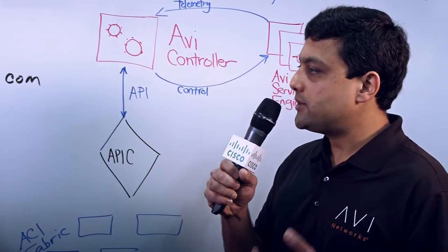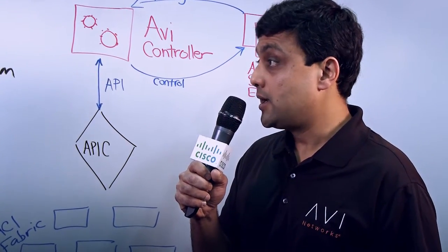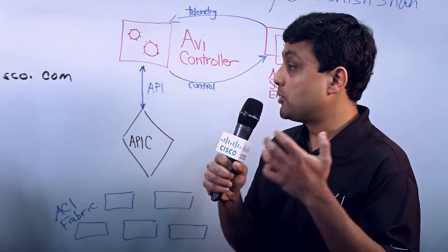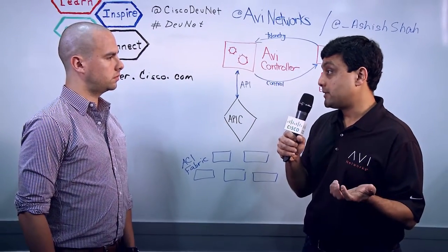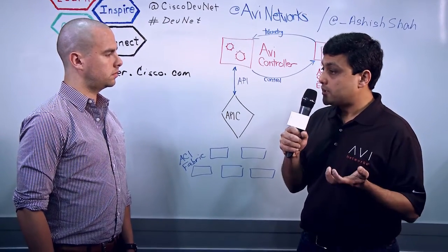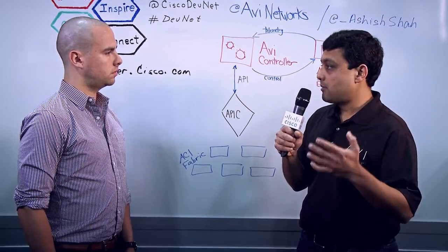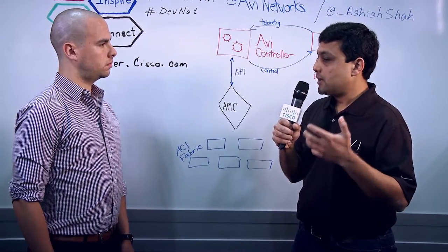Absolutely. So as you know, the data centers are moving to the next generation software-defined automated environments. And while Cisco ACI APIC solves their network problems at layer two, layer three, you still have a challenge with the load balancing the layer four to layer seven solutions. So what AVI Networks is trying to do is solve that last mile problem where you provide end-to-end automation from layer four to layer seven in terms of self-service delivery.